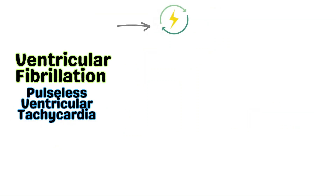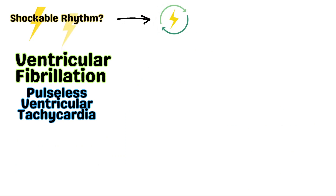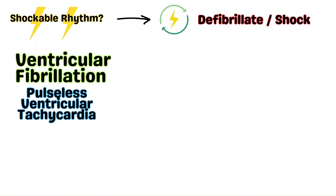If they are in a shockable rhythm, early defibrillation is ideal. The longer a shockable rhythm remains, the less likely it may respond to defibrillation. The fibrillation essentially overrides electrical activity in the heart. We hope that by defibrillating, the heart's normal electrical pathways take over and the patient resumes normal sinus rhythm that produces a pulse. Guidelines state that shock energy for the initial defibrillation is 120 to 200 joules.